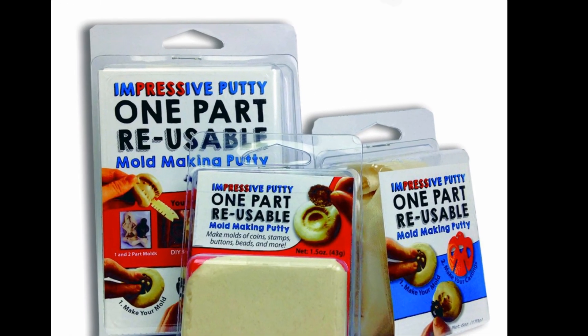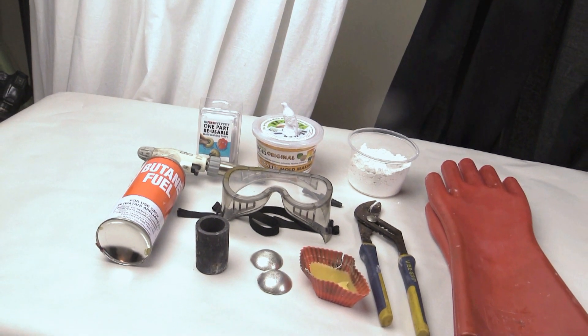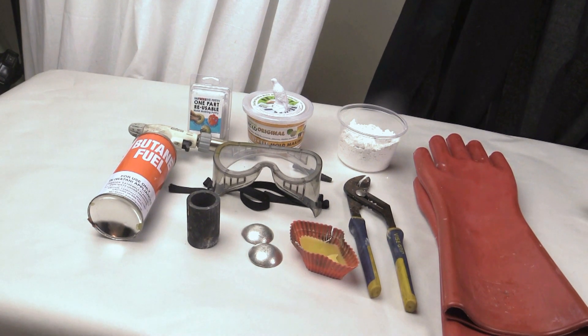The Impressive Putty is a heat and press mold making material that is extremely easy to make molds with but it is firmer so when you're using wax you may need to cut the mold to remove the wax without breaking it.